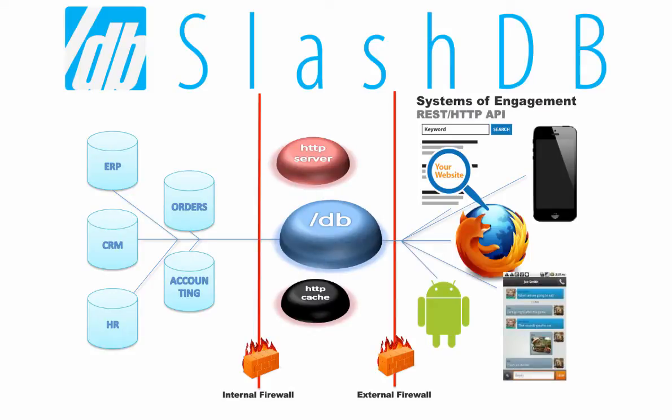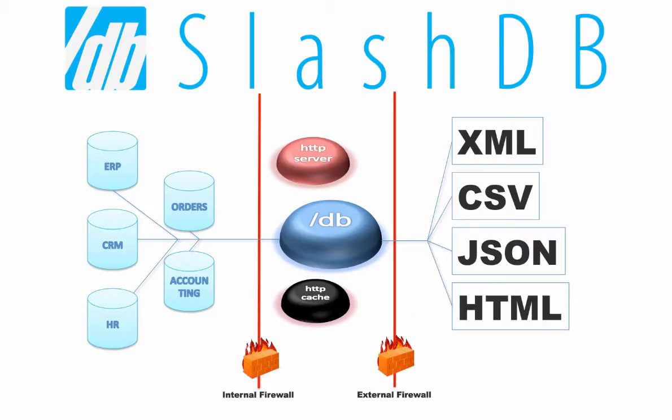SlashDB is a new kind of middleware which instantly adds a RESTful Web API to relational databases, so content becomes uniformly accessible to authorized web, mobile, and enterprise applications for reading and writing in a variety of standard formats.